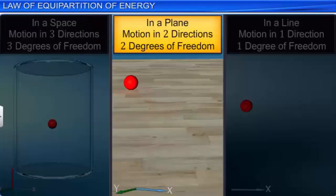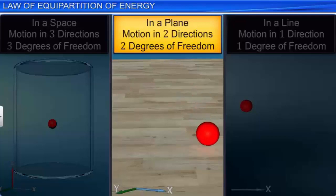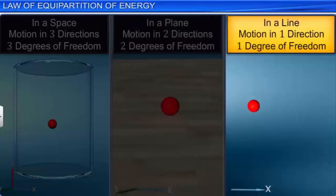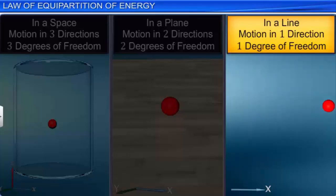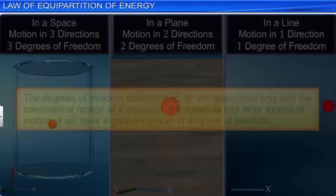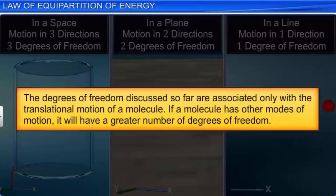Each translational degree of freedom corresponds to the motion of the molecule in a particular direction. If the molecule is moving in space, it can move in three directions — hence it has three degrees of freedom. If the motion is confined to a plane, it can move in two directions — hence two degrees of freedom. If the motion is confined to a line, it can move in one direction only — hence one degree of freedom. The degrees of freedom discussed so far are associated only with translational motion. If a molecule has other modes of motion, it will have a greater number of degrees of freedom.